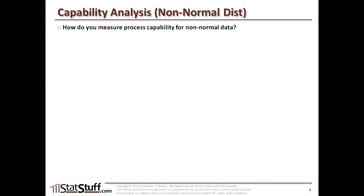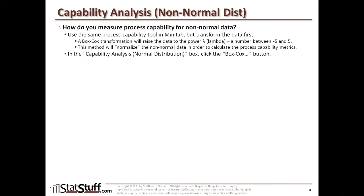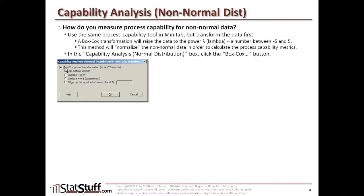Now let's explore how to run the capability analysis for non-normal distributions. Now that we know we have non-normal data, we're going to follow the same type of process capability as we did for normal data within Minitab, but instead we're going to allow Minitab to transform the data first into a somewhat normal data set. We're going to use what's called the Box-Cox transformation, which raises the data to the power of lambda — a number somewhere between negative five and five. This method normalizes the non-normal data so we can calculate process capability using very similar metrics to those we've already seen for a normal distribution.